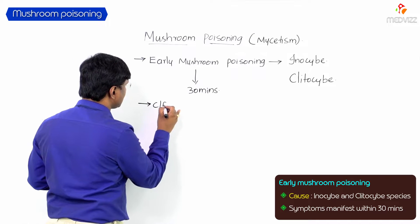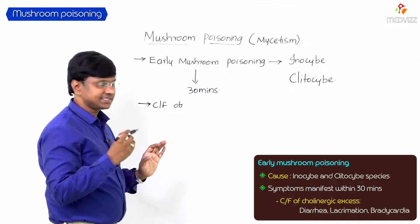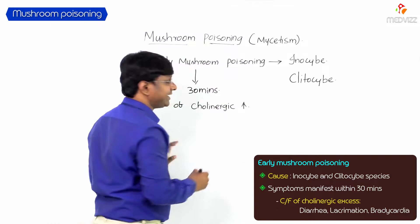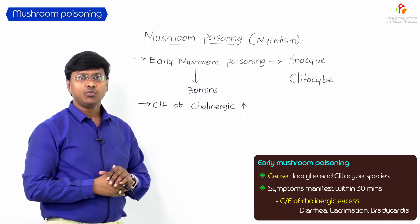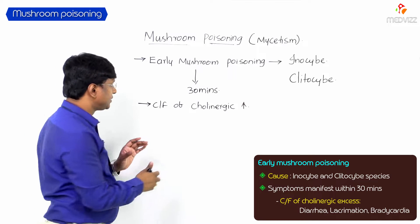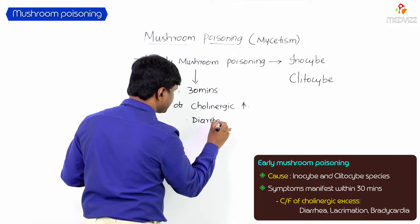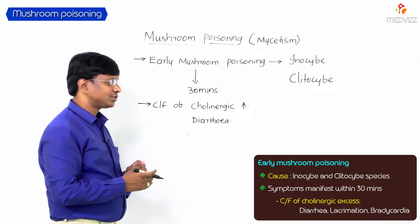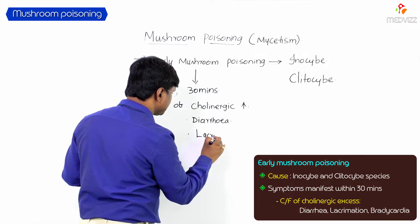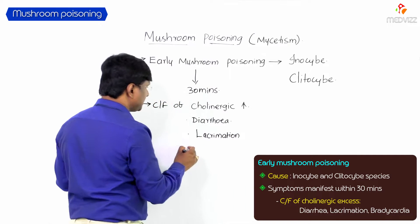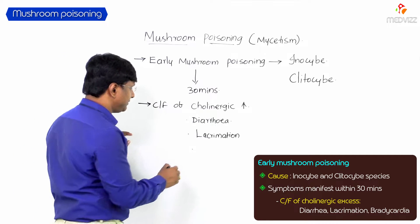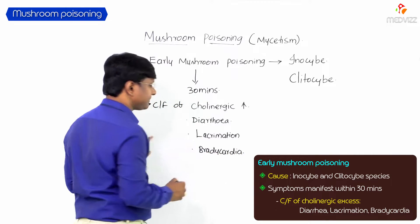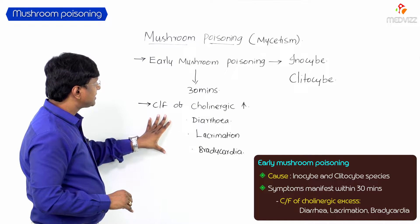The clinical features are those of cholinergic excess. These include diarrhea due to increased gastrointestinal motility, excess lacrimation due to increased secretions, and bradycardia due to the effect of cholinergic excess on the heart, which reduces heart rate.